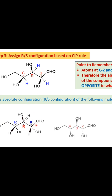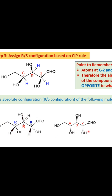This is how we assign configuration for molecules using perspective formula. I have just removed the bonds that were earlier inserted. This is our original molecule without the hydrogen atom, and its answer is 2R, 3R, 4R.